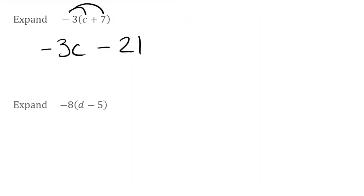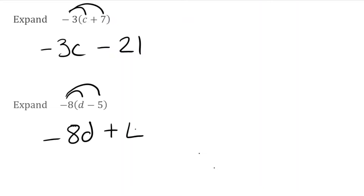For the next question I have negative 8 times D, which is negative 8D. But this time I've got negative 8 multiplied by negative 5. A negative times a negative makes a positive, and 8 times 5 is 40. So I have negative 8D plus 40. We could also rewrite this as 40 take away 8D.